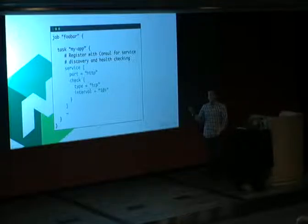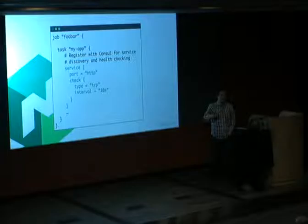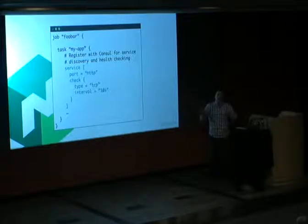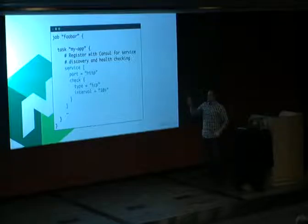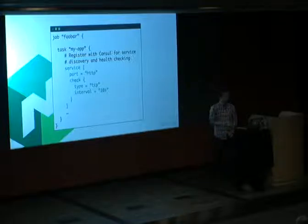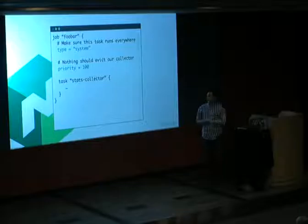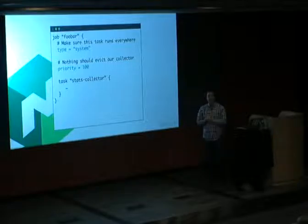You can inject environment variables into jobs. Service discovery is built in — currently only with Consul. You specify a service block and it automatically registers the job with service discovery when it comes up. You don't need to specify the name or port number — the name comes from the task, and the port is whatever Nomad allocated. You can also specify health checks.